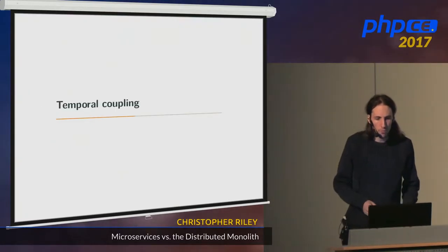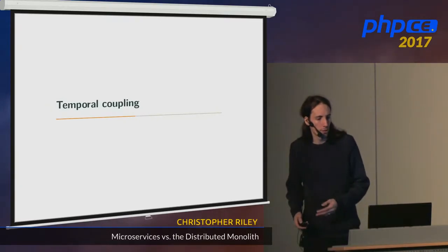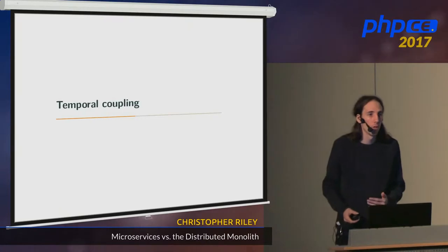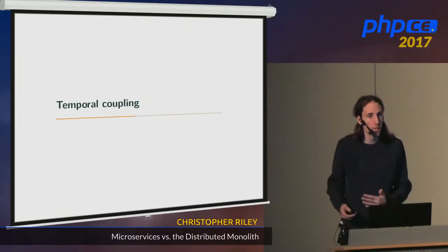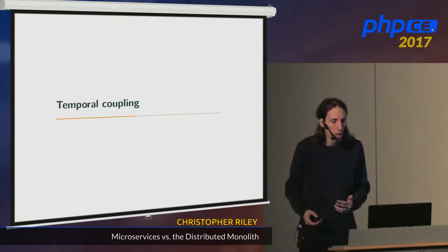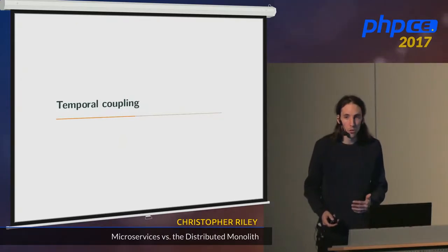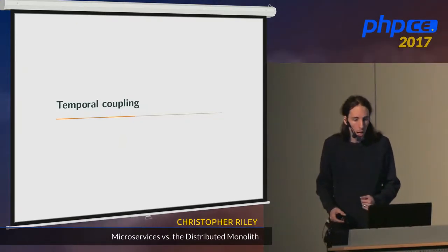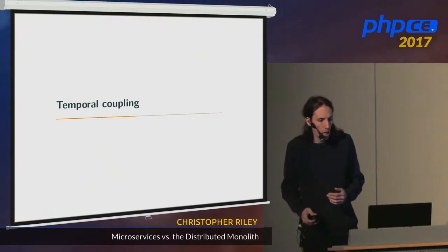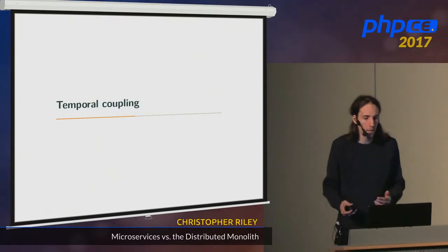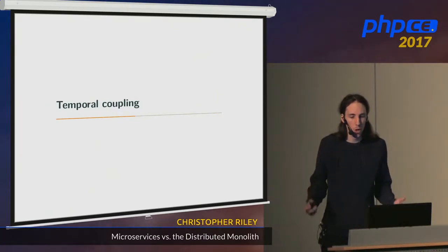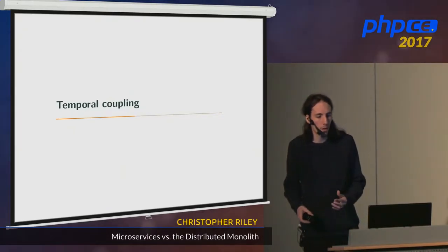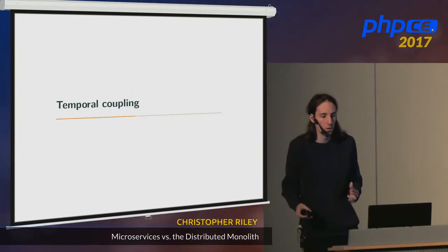So up until now, the pitfalls I've described are fairly easy to manage — there are quite easy ways of getting around them, and with good tooling you can alleviate the pain. Both a common library and interdependent deployments are examples of coupling between microservices. However, temporal coupling is by far the most damaging.